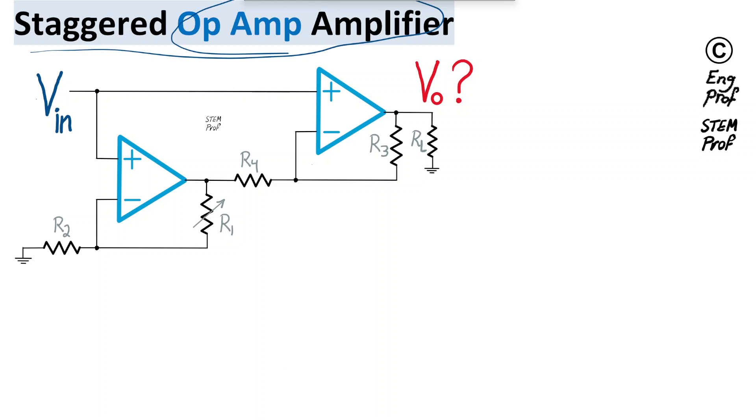A staggered op-amp amplifier circuit is discussed in this example. We want to find the output voltage Vout as a function of the applied input voltage.